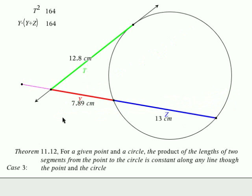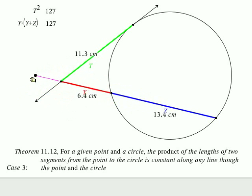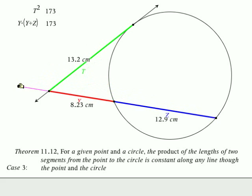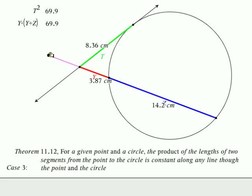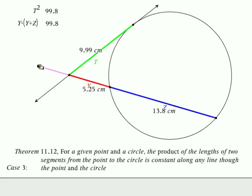Third case and the last case is when we have a tangent. Here's our point of tangency. And in a way it's a little bit simpler - if we square T, whatever the green line happens to be, that will equal the same thing as Y times the quantity Y plus Z. In other words, red times the quantity of red and blue together.